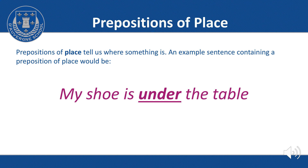Let's have a look at prepositions of place. Prepositions of place tell us where something is. For example: beside, under, on top, against, beneath, or over, etc. An example sentence containing a preposition of place would be: My shoe is under the table. So very simply, they just tell us where something is.